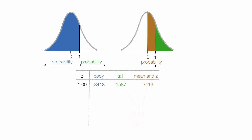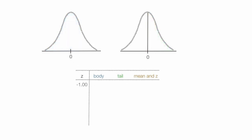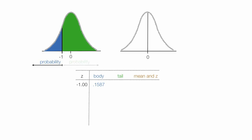I would encourage you to try to find these values in the back of your stats book. Now I'm going to use the z-value of negative 1, and that's where negative 1 would be right there. The probability an observation has a z-score less than negative 1 is 0.1587. The probability that it has a z-score greater than negative 1 is 0.8413. And the probability that it has a z-score between the mean and negative 1 is 0.3413.